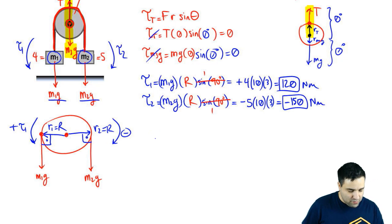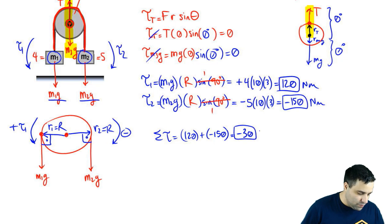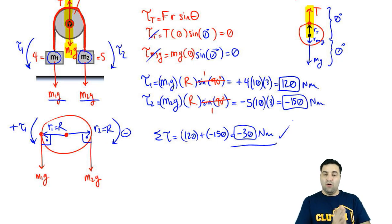And when you add the whole thing, the sum of all torques will be 120 positive plus 150 negative. So the net torque is going to be negative 30 newton meter. And that's it. That's it for this one. So hopefully this makes sense. I don't know if you have any questions. Let's keep going.